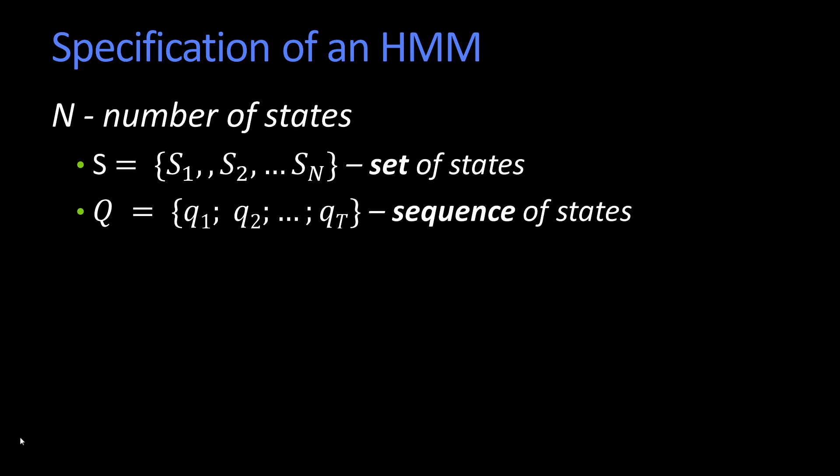So to make this a little bit more formal, we're going to specify all the elements of an HMM, and you've already seen them. N is going to be the number of states, so S1 through SN is our set of states. So that's like sunny, rainy, snowy.